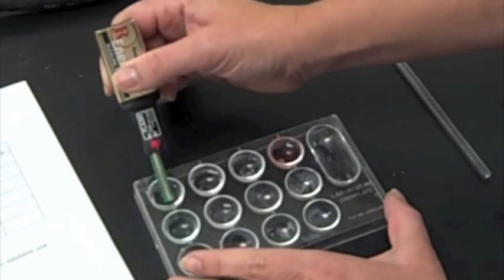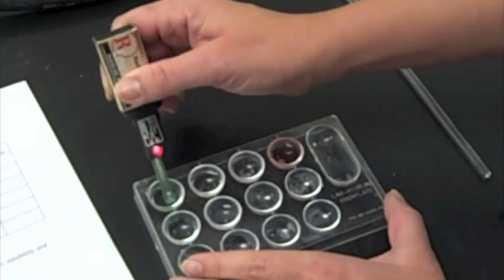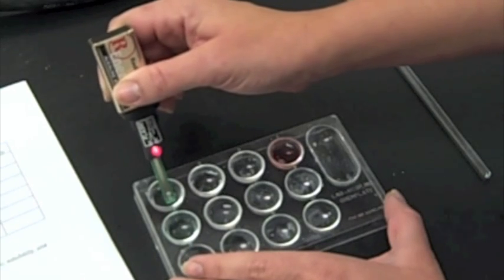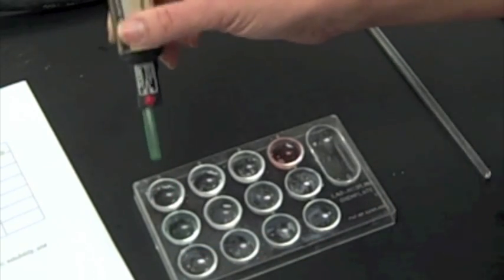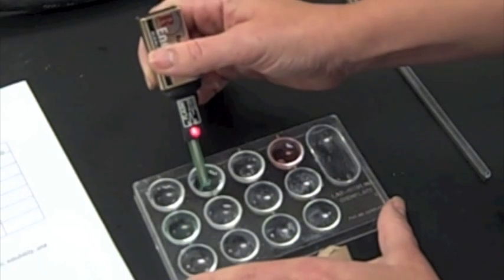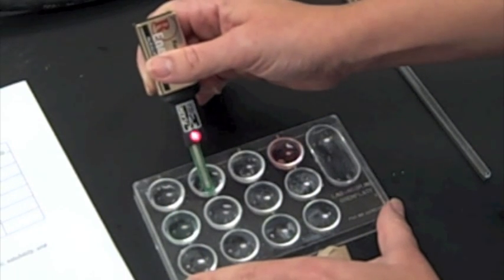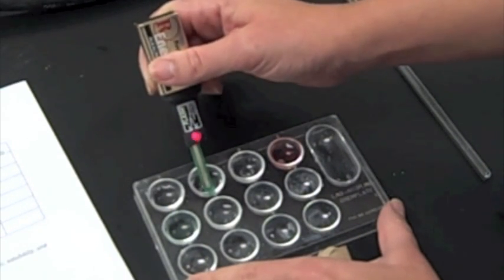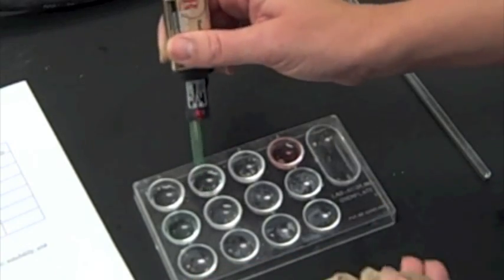Alright, so first up is sugar. Put it in the water, nothing. So sugar is not conductive. Put it in the salt, and there's a positive test. So salt water is definitely a conductive solution.